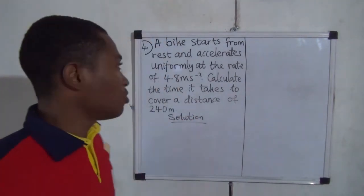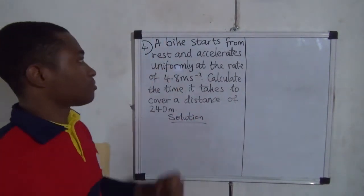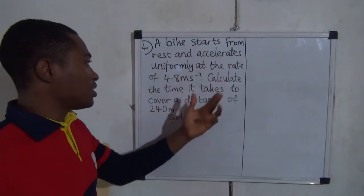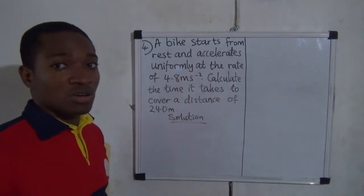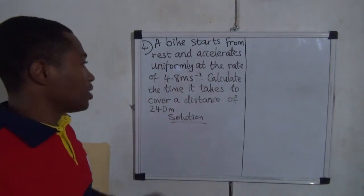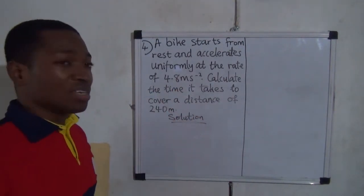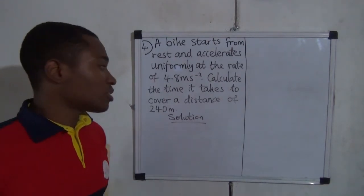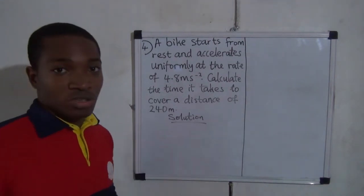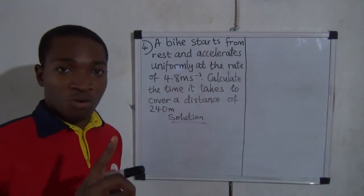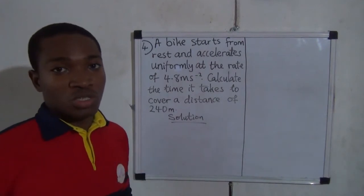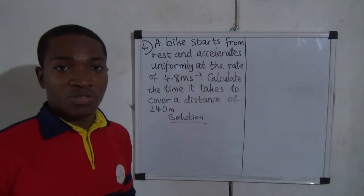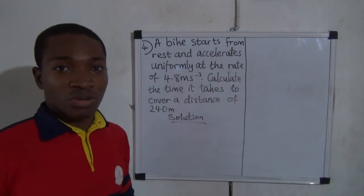Okay, this is the next question. How would you solve this? A bike starts from rest and accelerates uniformly at the rate of 4.8 meters per second squared. Calculate the time it takes to cover a distance of 240 meters. Which of the equations of rectilinear motion would you use? I want you to decide — pause this video and write out your equation.